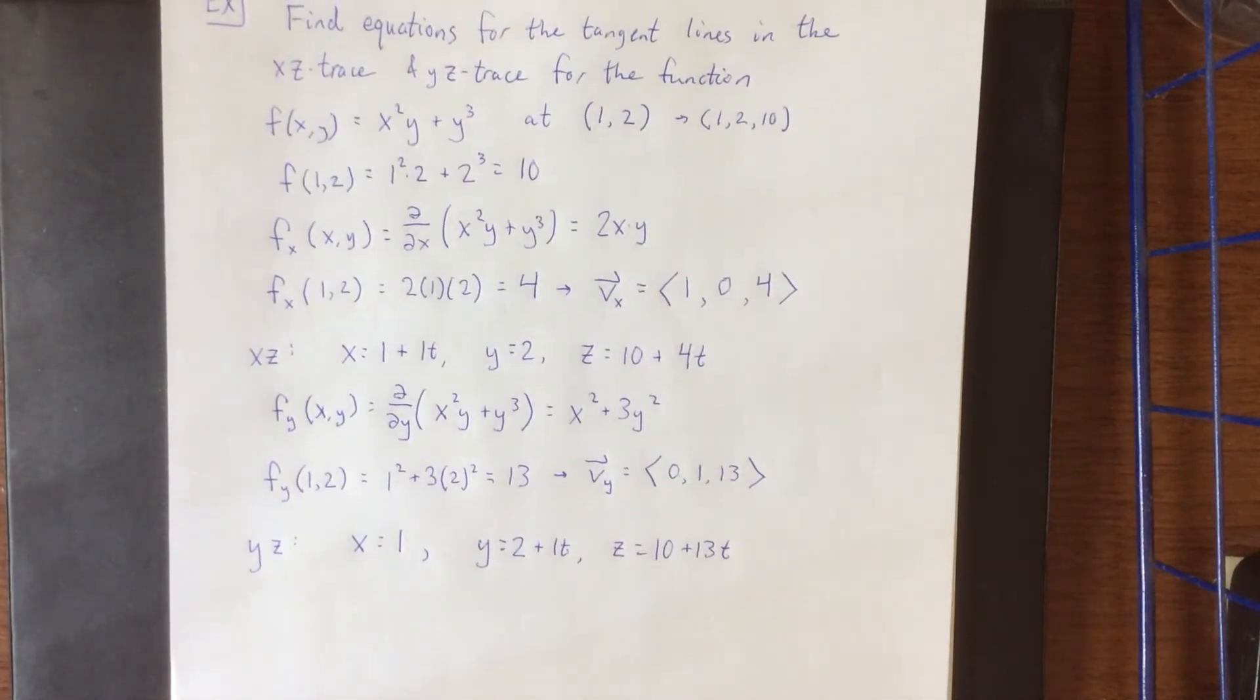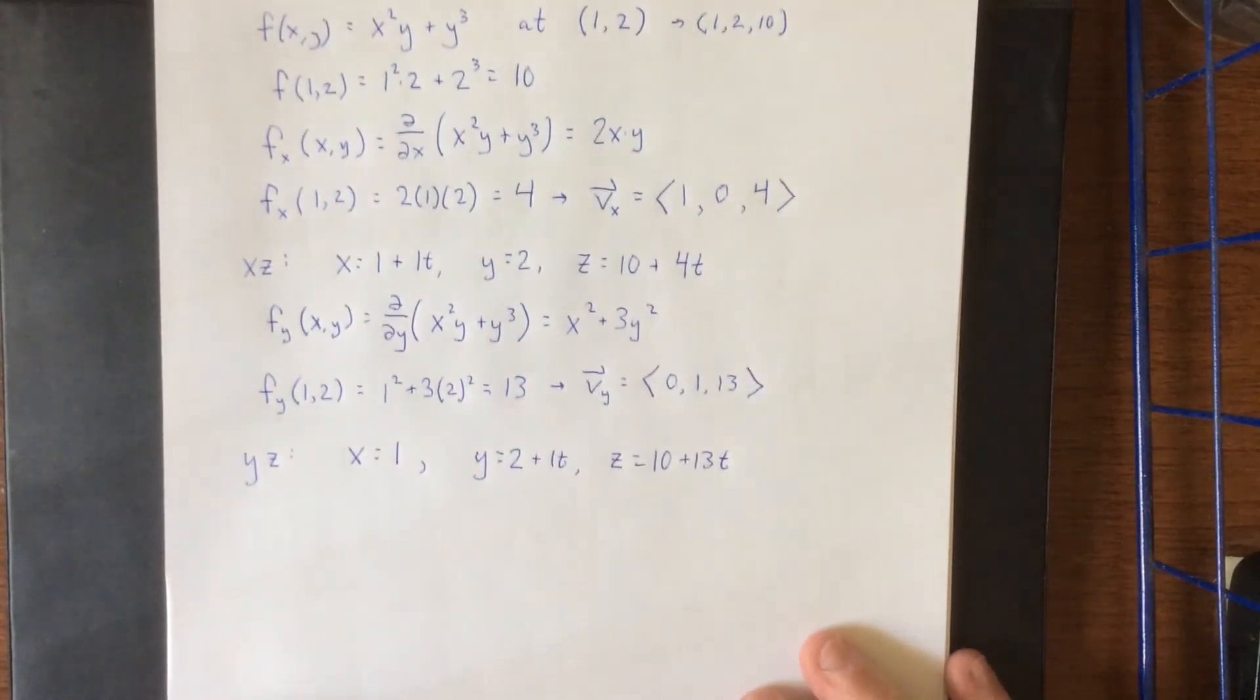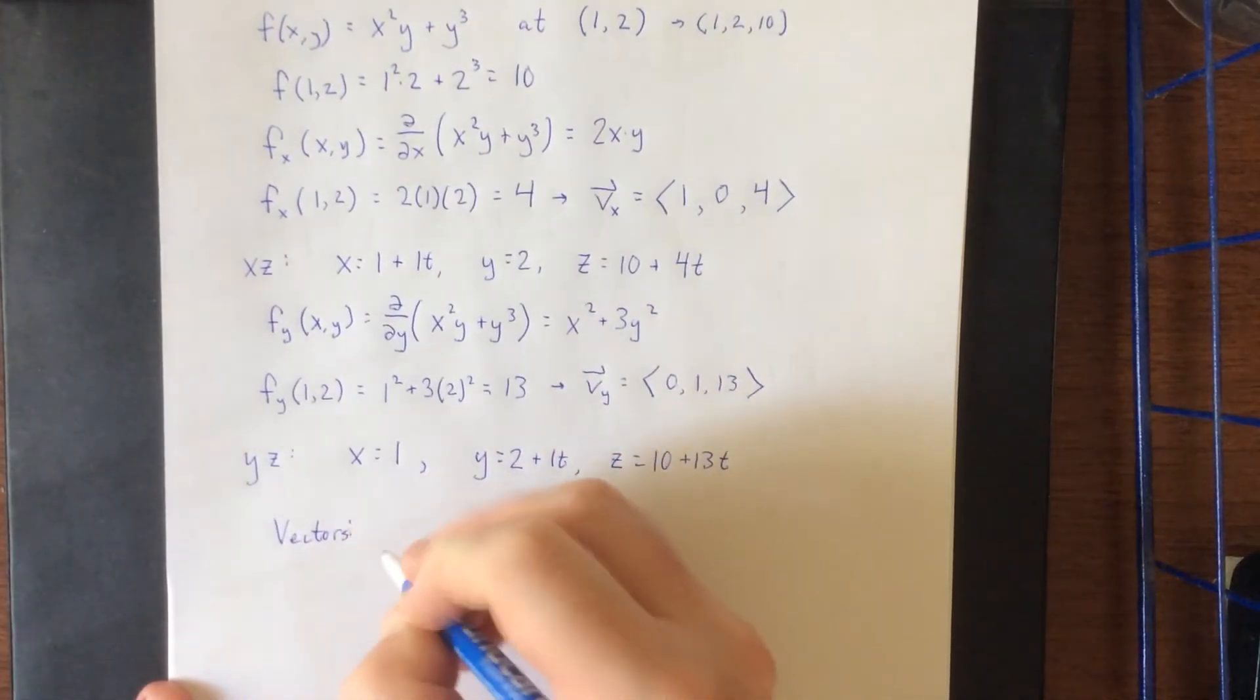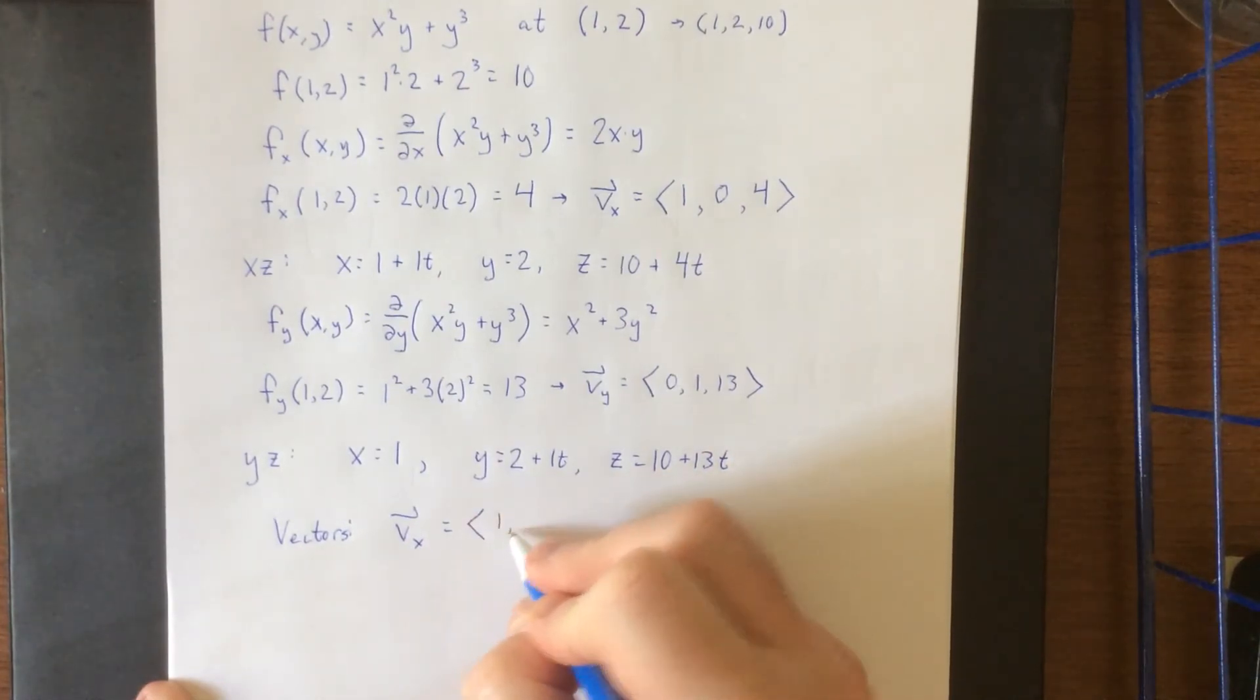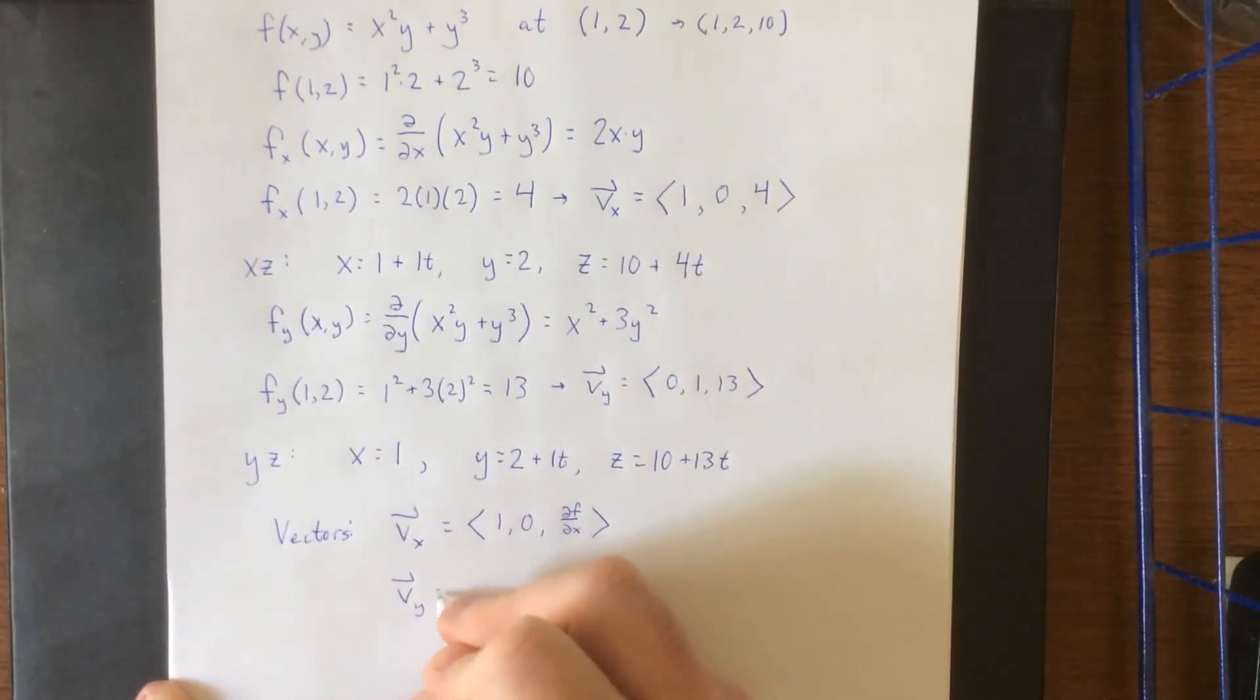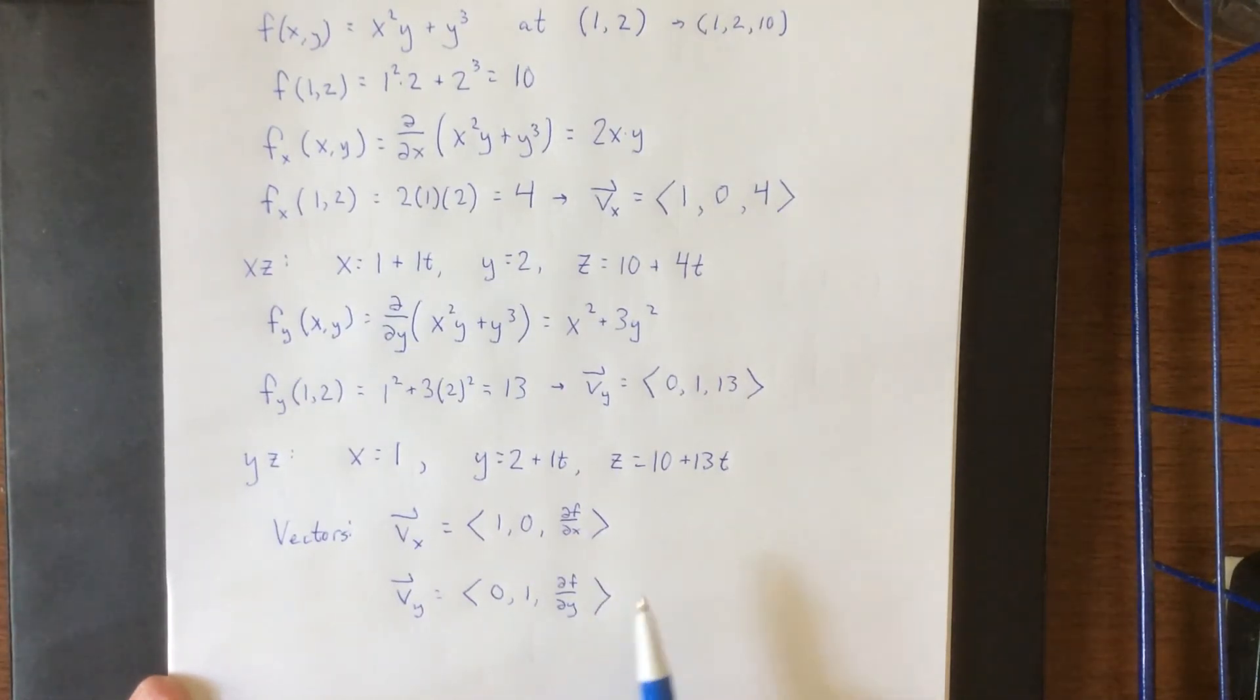So that is how we would be interpreting these partial derivatives in terms of slopes of tangent lines. More generally the direction vector for the xz trace can be thought of as (1, 0, partial derivative of f with respect to x). And for the direction vector in the yz trace that can be thought of as (0, 1, partial derivative of f with respect to y). So it does generalize pretty nicely and you will see these vectors show up once again when we start talking about equations of tangent planes rather than tangent lines.